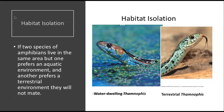Another prezygotic barrier is habitat isolation. If two species live in the same area but one prefers an aquatic environment and another prefers a terrestrial environment, they will not mate. As an example, there are two different species of Thamnophis — a snake — where one lives on land and one lives in water, and obviously those two are not going to mate. That is habitat isolation.